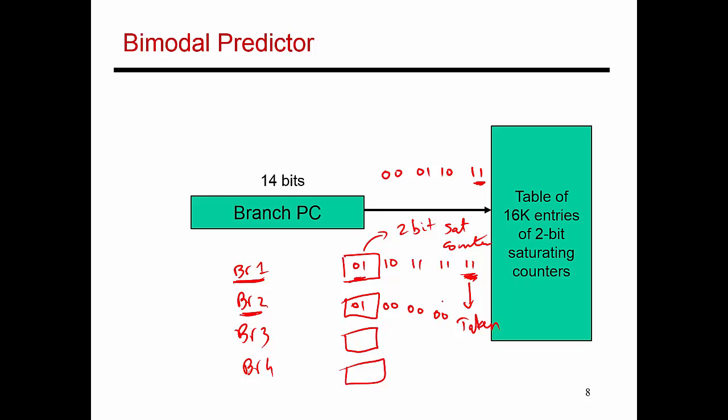And so the next time I see the branch, I first look at the predictor, I look at this counter value. It says 0, 0, so I make a prediction that the branch is going to be not taken. And again, if history repeats itself, this ends up being a correct prediction.